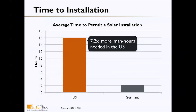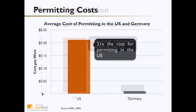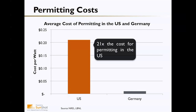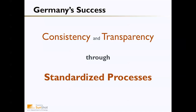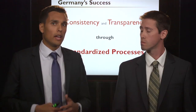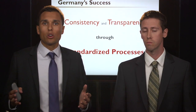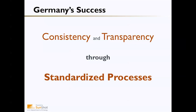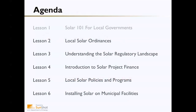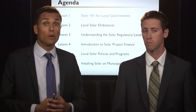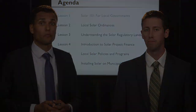One of the barriers causing this delay is the time it takes to go through the permitting process. Comparing the U.S. to Germany, we currently take about seven times longer to go through that permitting process, and as the old saying goes, time is money — this extra time translates into 21 times the cost. Germany achieved efficiency by creating consistent, transparent, and standardized processes, and local governments have the opportunity to do the same. There are local governments around the country that have adopted best practices to reduce these soft costs, and throughout the rest of this series we'll cover strategies that local government leaders can use to affect change and reduce these costs.